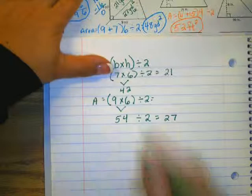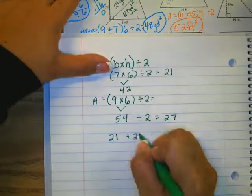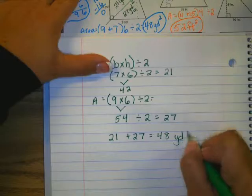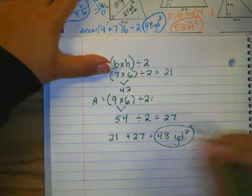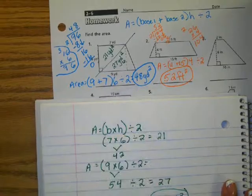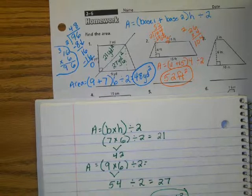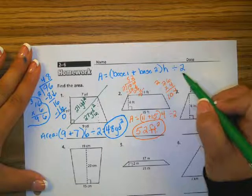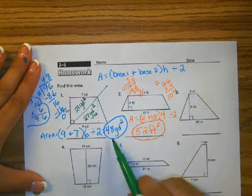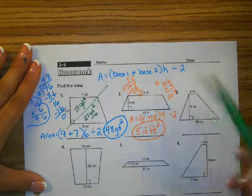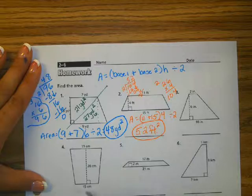I just need to add them together. So 21 plus 27 gives me 48 square yards, which is the same answer that I got before. Students may choose to do it either way. Now that I've got you started, use your formula. Show me all of your thinking. Circle and label your answers, and go ahead and finish this page.